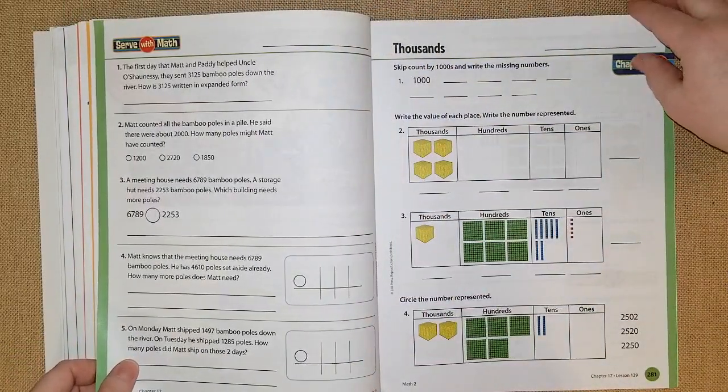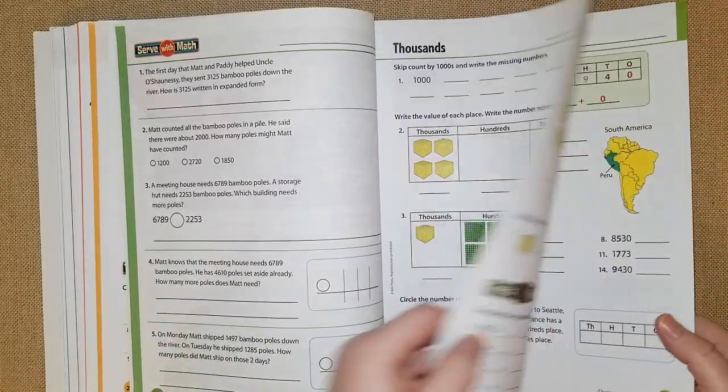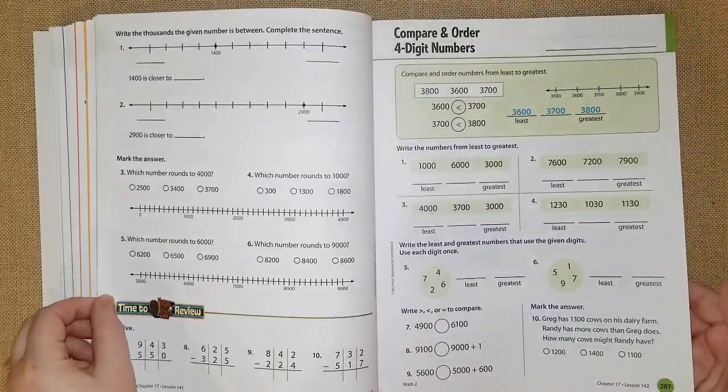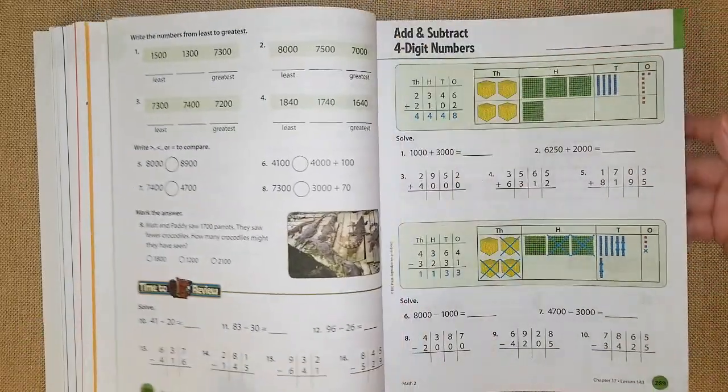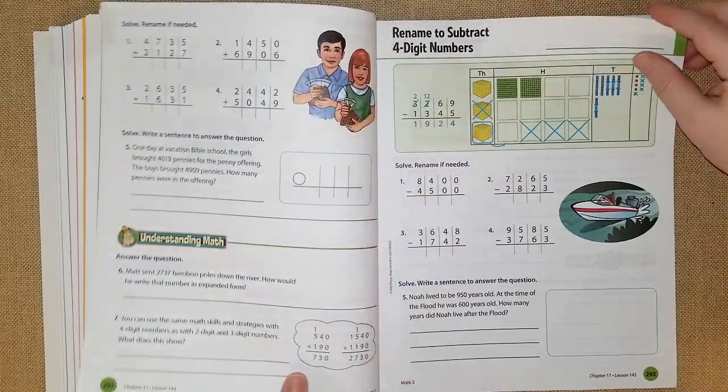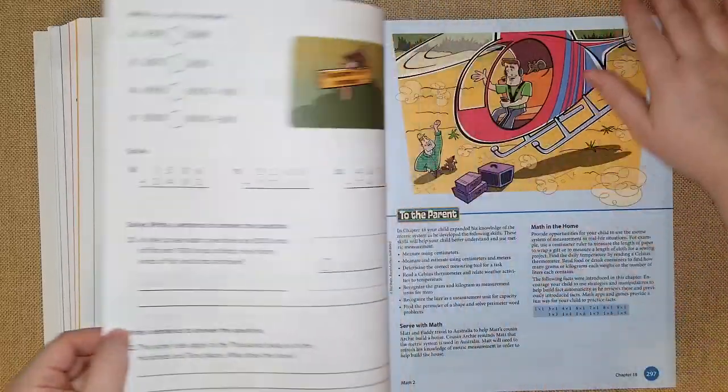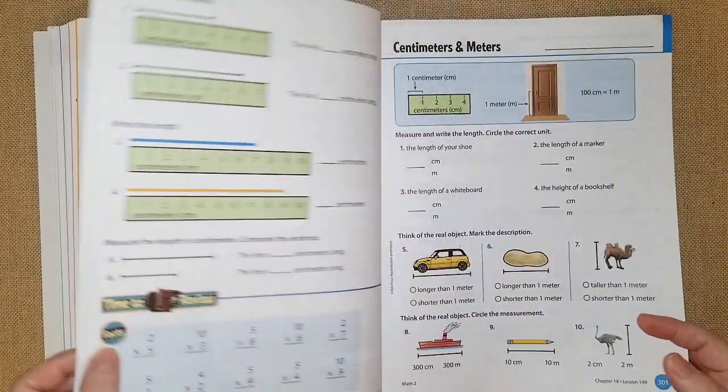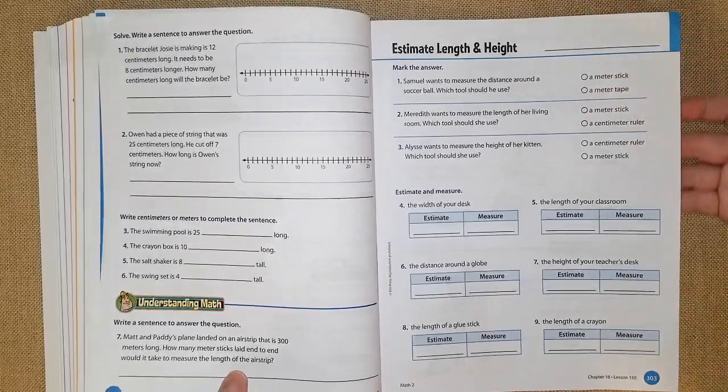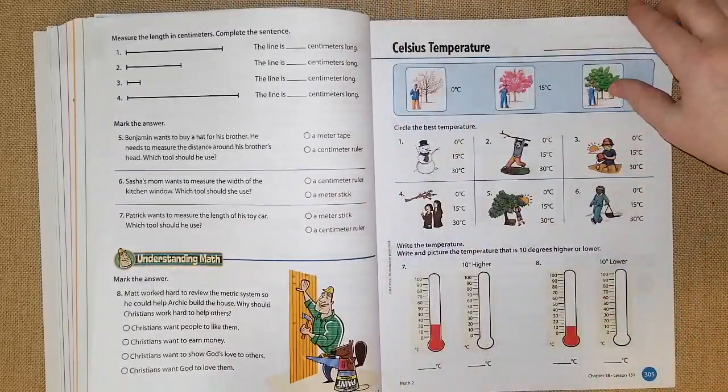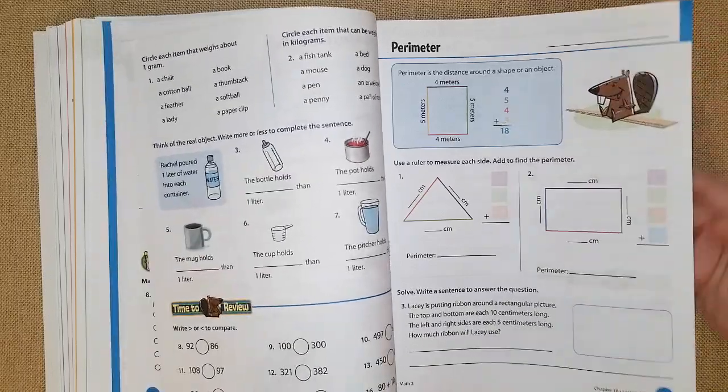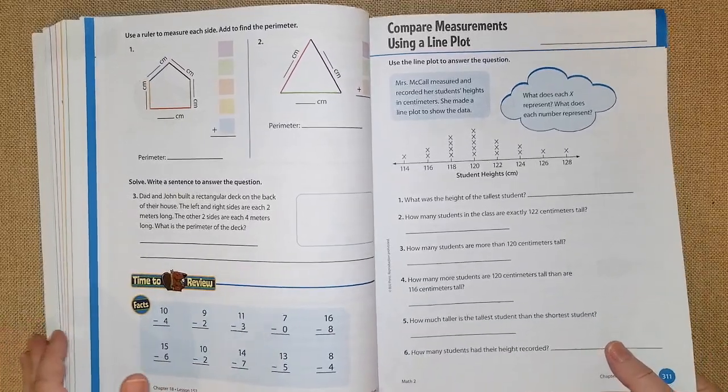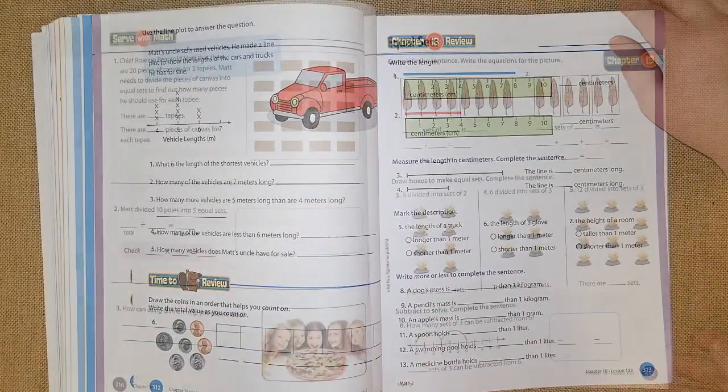And chapter 17 they are working on thousands and place values, round to the nearest thousand, compare and order four digit numbers, add and subtract four digit numbers, rename to subtract four digit numbers and so on. And chapter 18 they are doing measuring, so centimeters and meters, estimate length and height, celsius temperature, figuring out the perimeter, the distance around a shape or an object, comparing measure using a line plot.